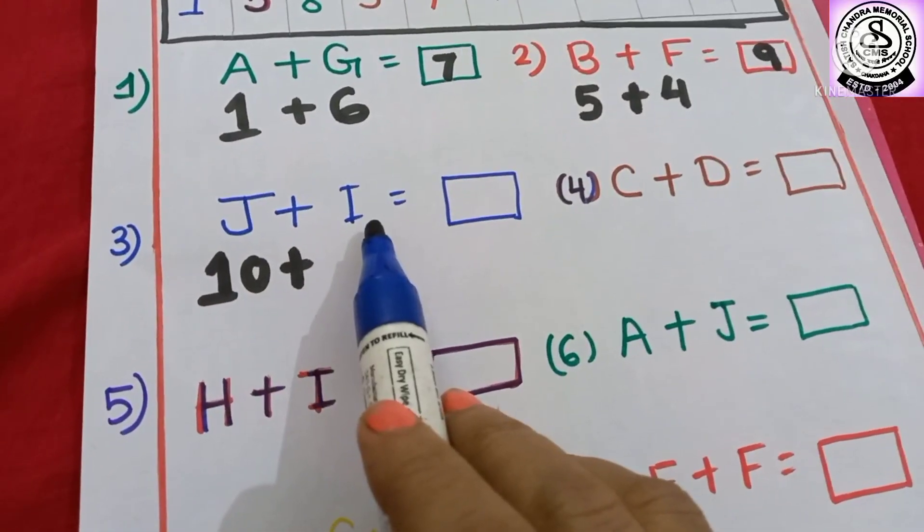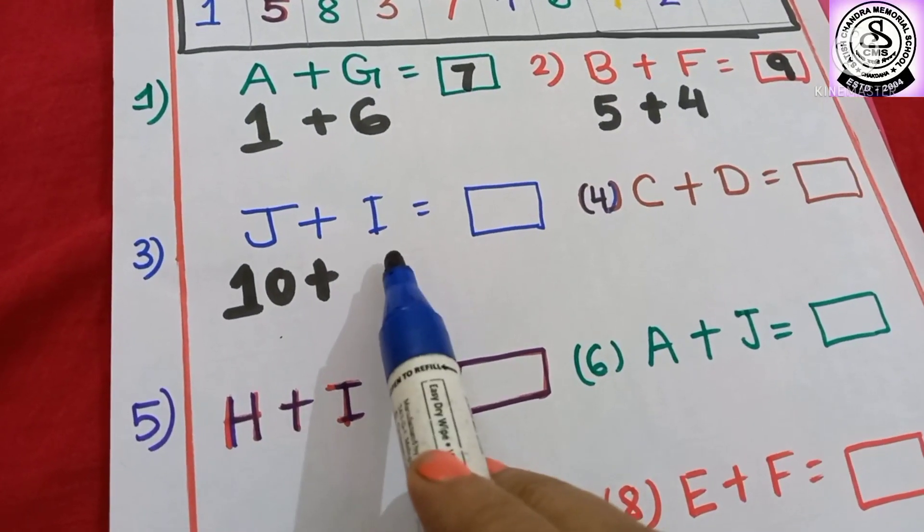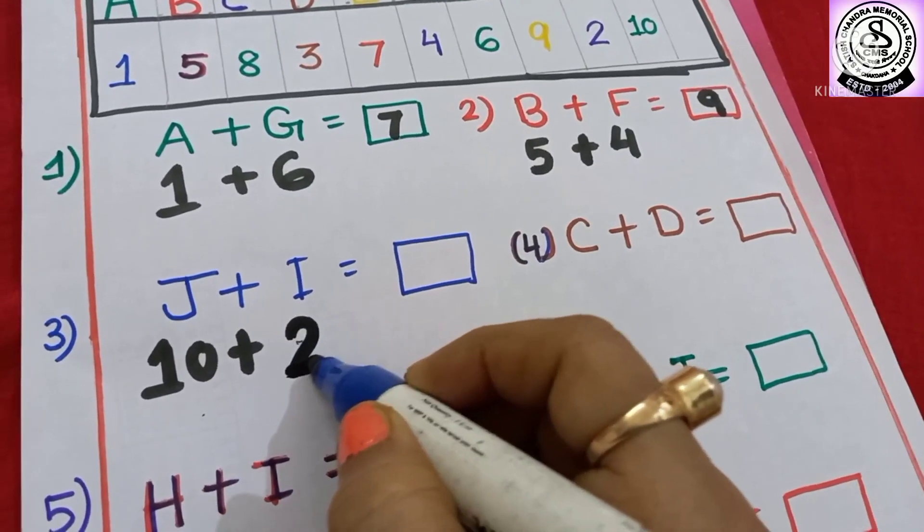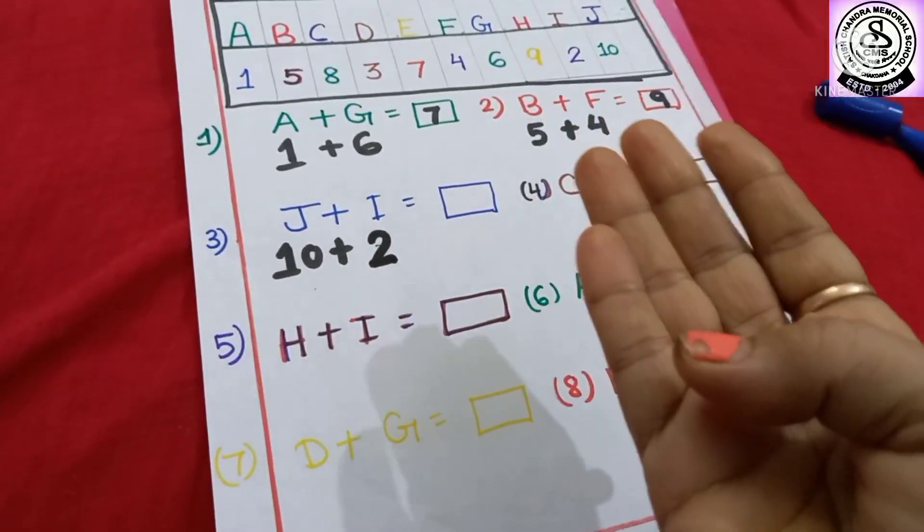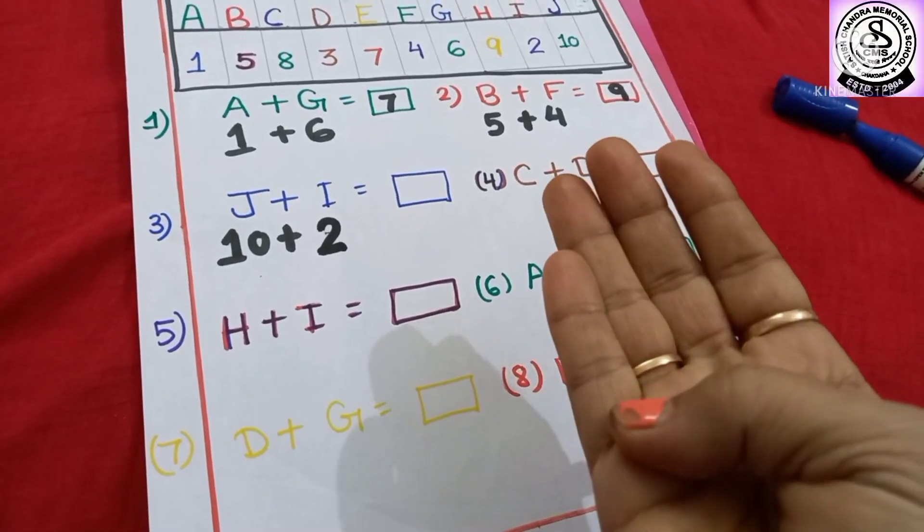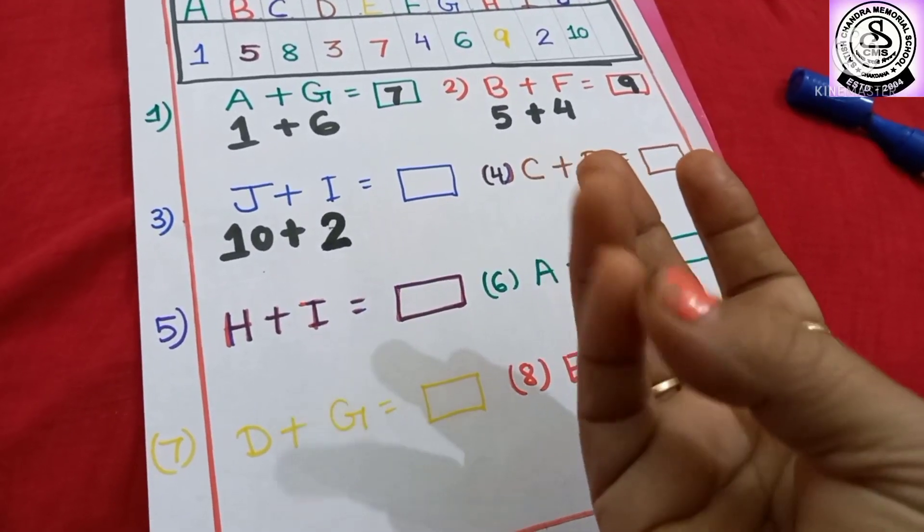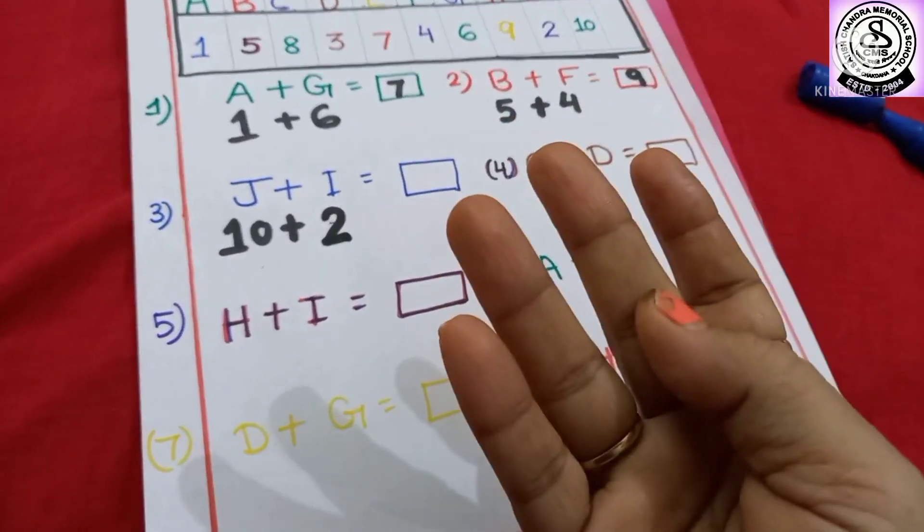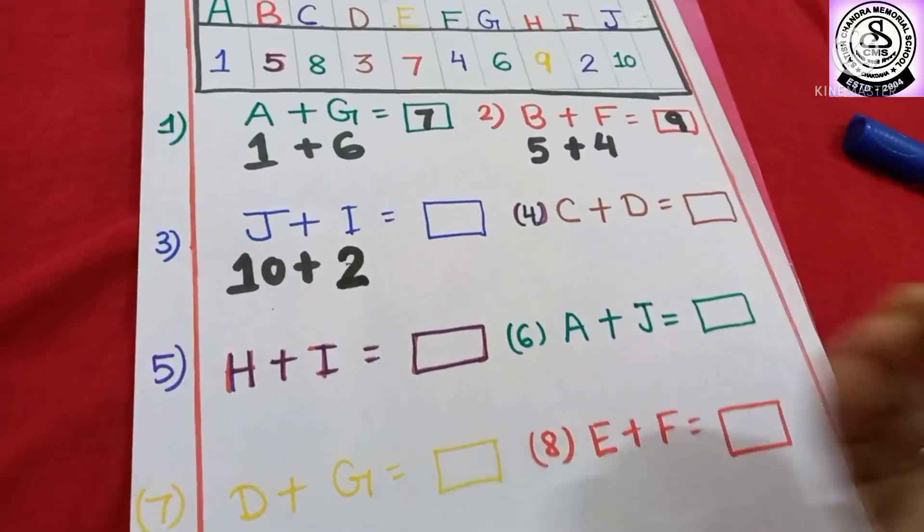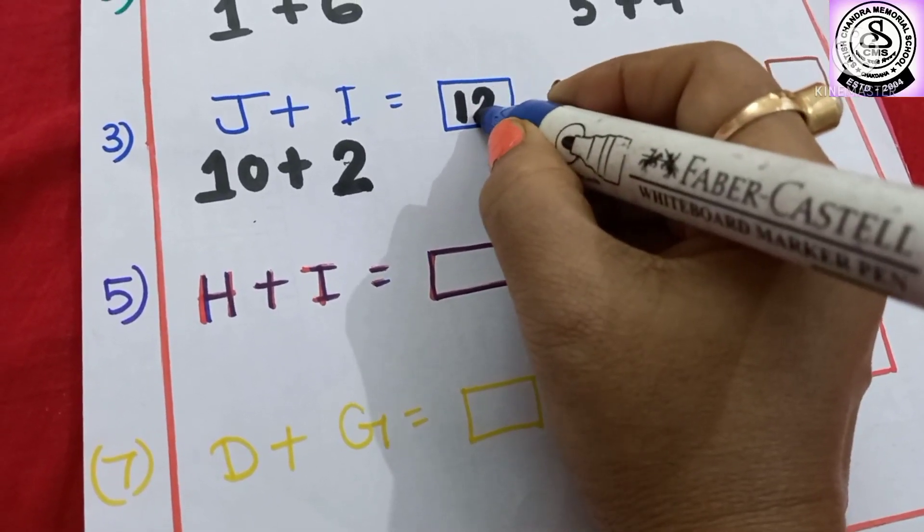J plus I. J means 10, and I means 2. So, 10 plus 2. After 10 you have to count 2 finger marks: 11, 12. You can count 1 through 10, then after 10 count more 2 finger marks: 11, 12.